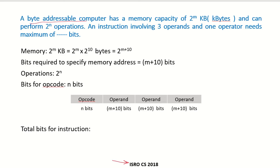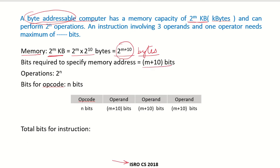We have a byte-addressable computer which has a memory capacity of 2 to the power of m kilobytes. That is 2^m into 2^10 bytes, which equals 2^(m+10) bytes. Since it is byte-addressable, each byte has an address. To address 2^(m+10) bytes, we require m plus 10 bits to address any particular byte in memory.